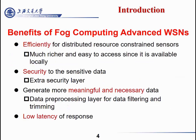The benefits of fog computing for advanced WSNs are that fog is much richer and easier to access since it is available locally, making it efficient for distributed resource-constrained sensors. Because of the extra security layer, we can encrypt or decrypt sensitive data before it is sent to the main network. The data processing layer can combine network information before it is sent and generate more meaningful and necessary data, resulting in low latency of response.